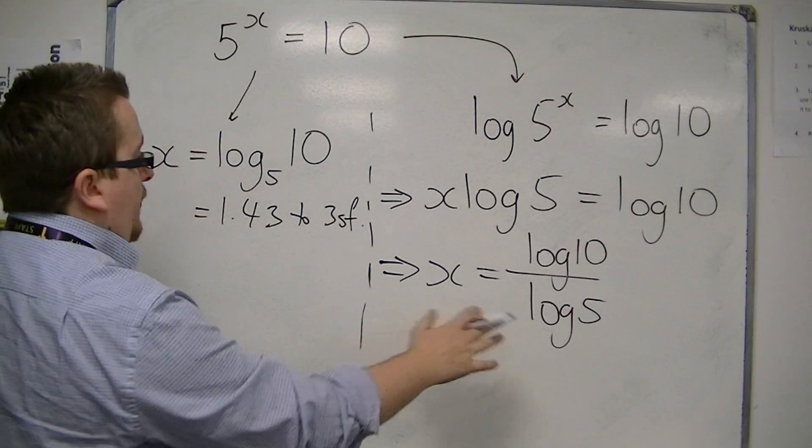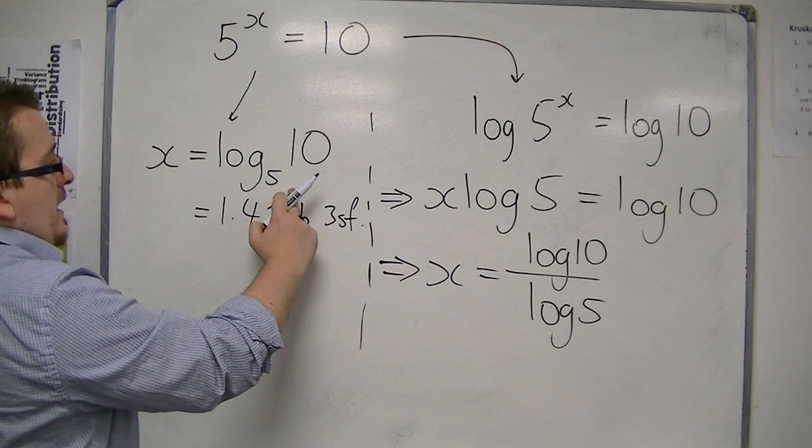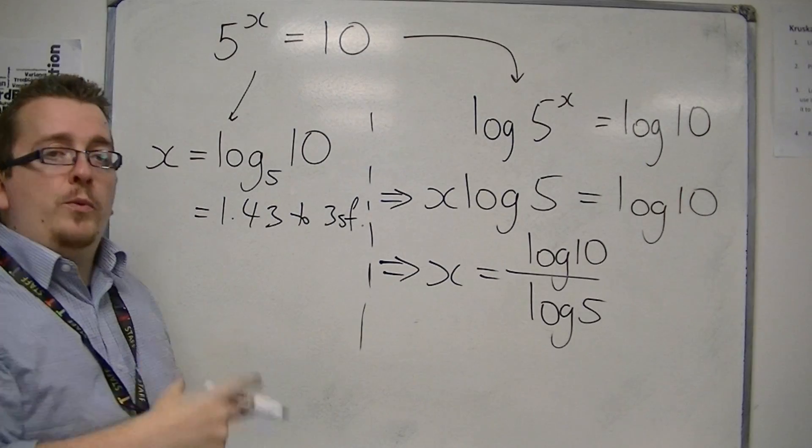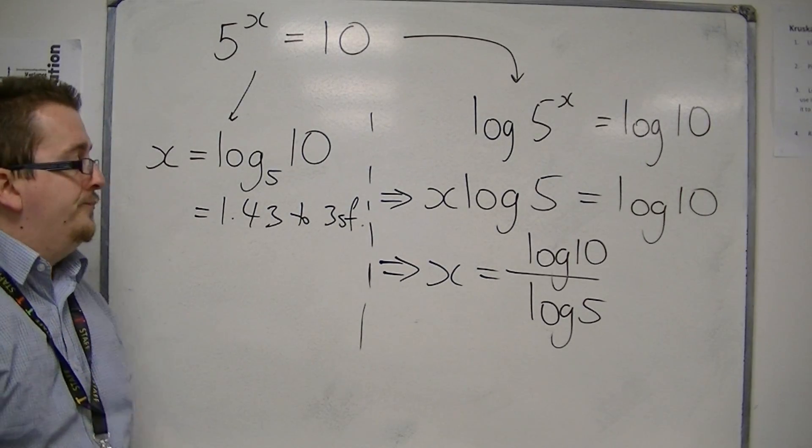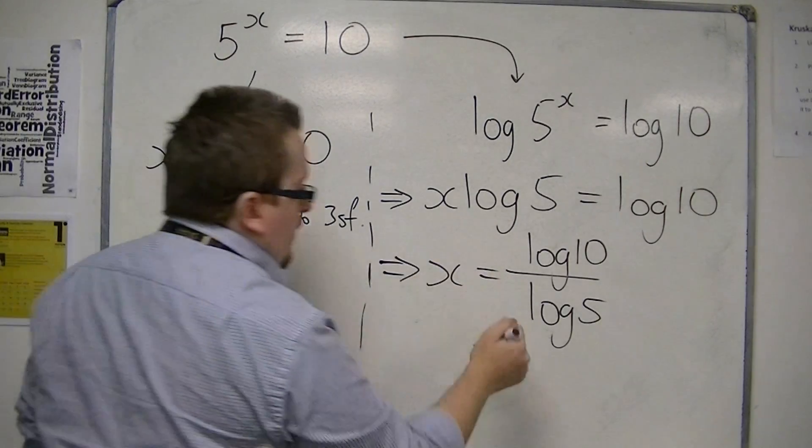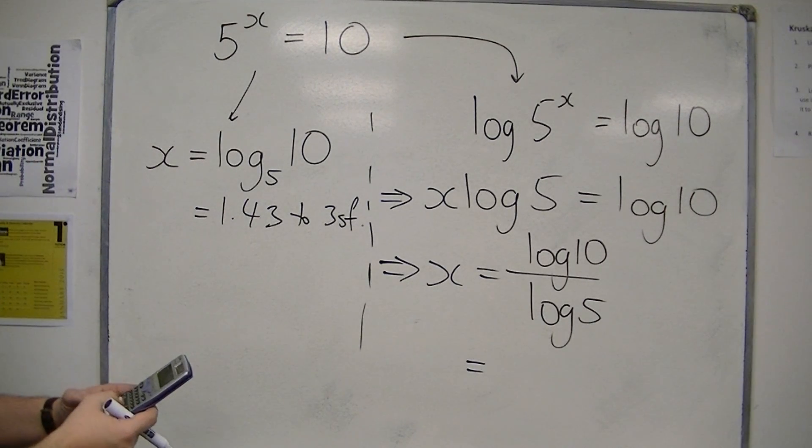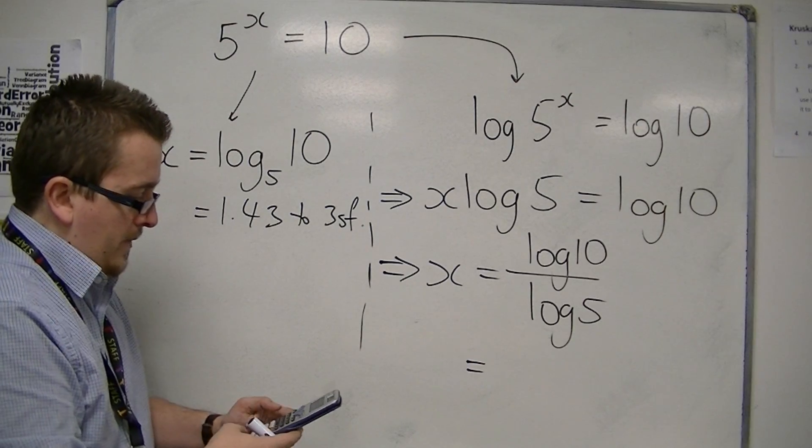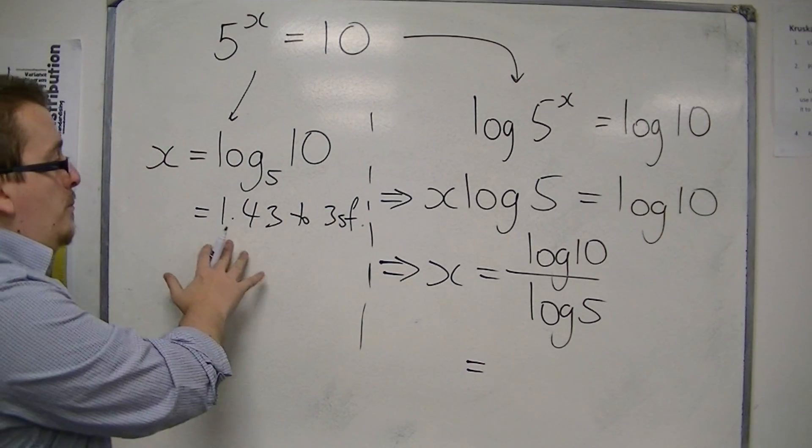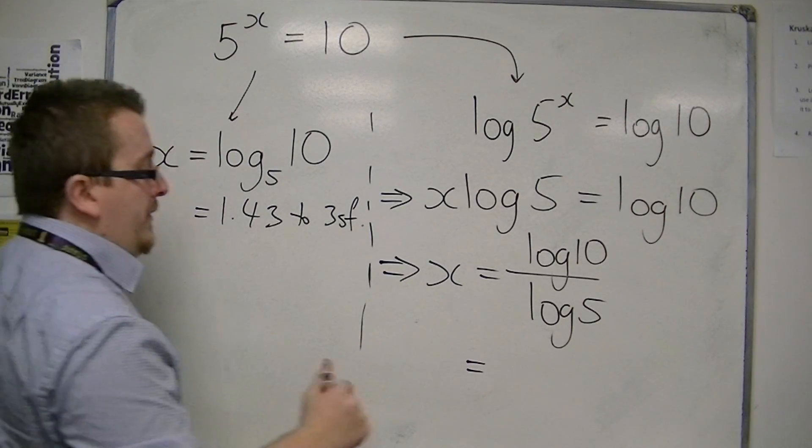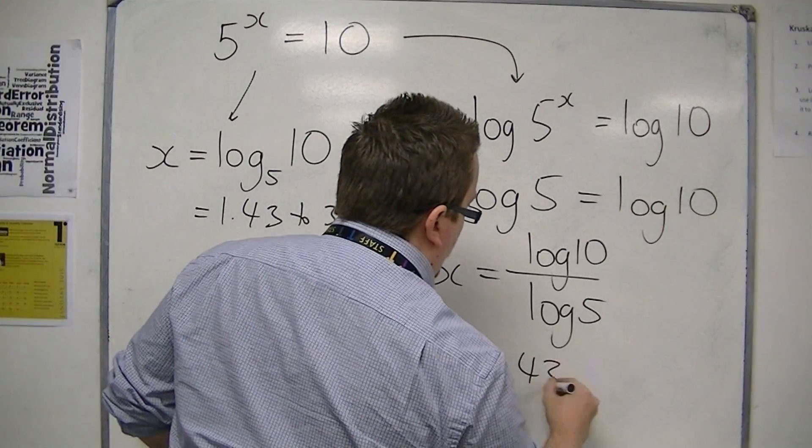Now this looks different to this, but that's just because we're using a different base. If you type that directly into a calculator, log of 10 divided by log of 5, you should still get 1.43, exactly the same answer as we got before.